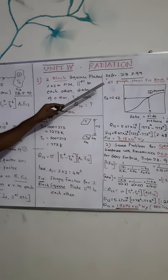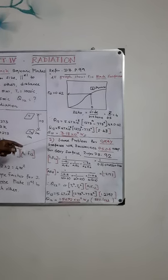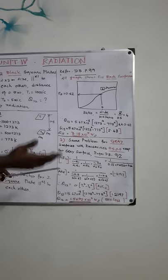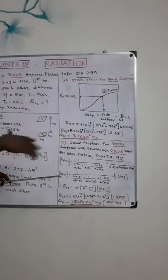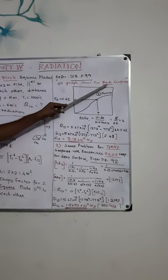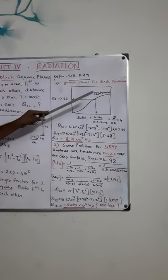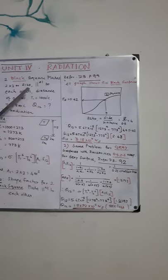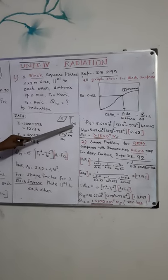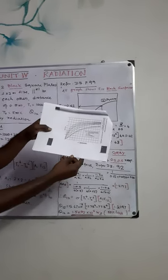At page number data of 99, you can be able to identify this graph. These are all the graphs, after this page number 99, up to 120, you can be able to see the number of graphs. All the graphs show the shape factor of black surfaces only, based on its orientation. For example, our case, these square plates are parallel to each other, at a distance of 0.5. If you closely look at this graph, you can be able to see like this.